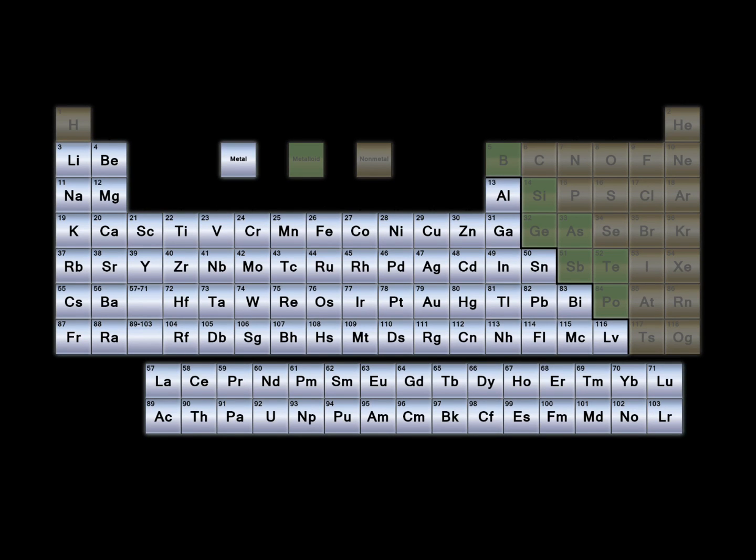Most elements are classified as metals. Most metals are solid and can be recognized by their luster or shine. Many metals are malleable, which means that they can be pounded into sheets or other shapes.